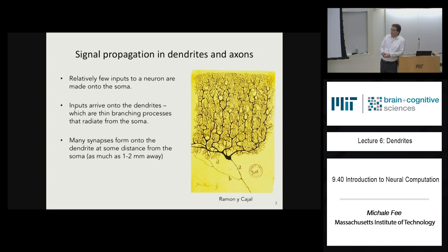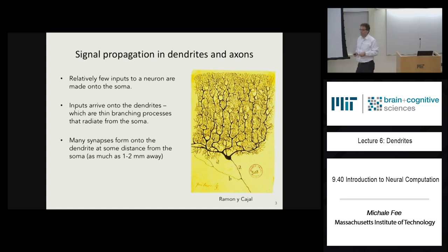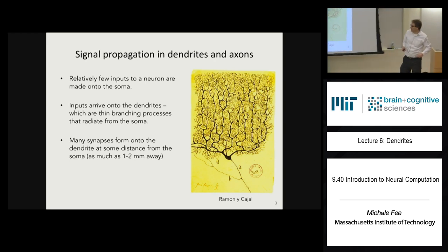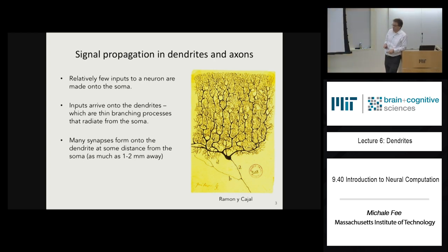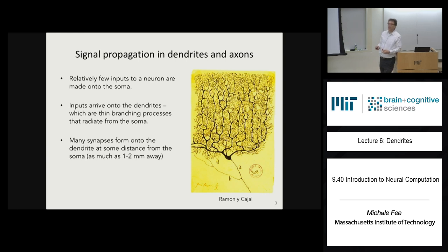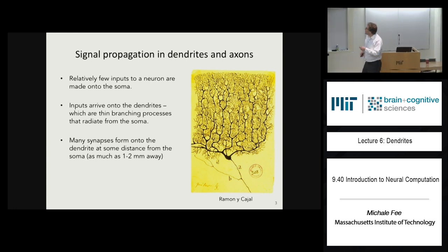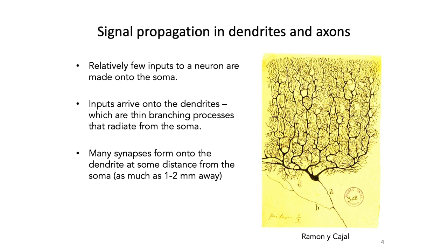There is a population of neurons in deep layer 5 that have dendrites reaching all the way up into layer 1, and those dendrites can be as long as a couple of millimeters. So we really have to think about how signals get from out here in the dendrite down to the soma — and that's what we're going to talk about today.